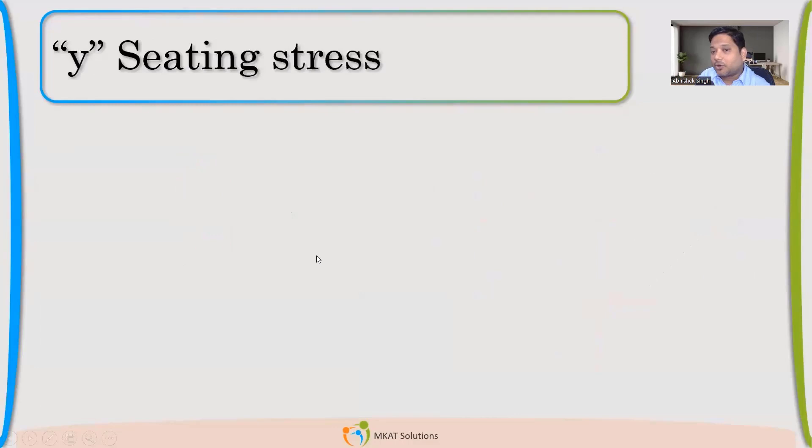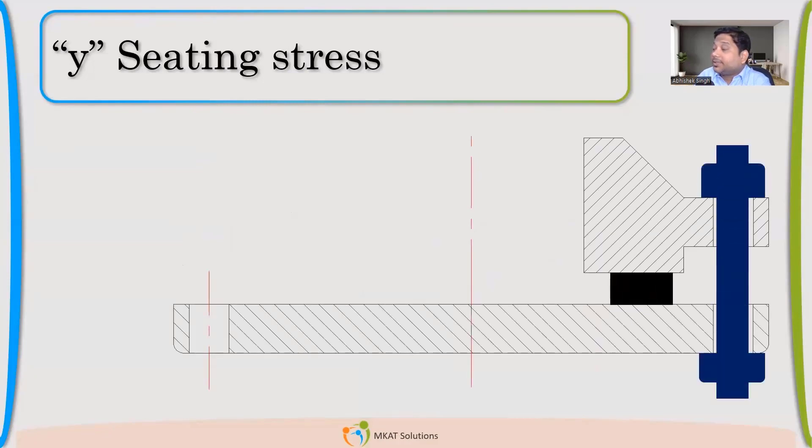Now, let us talk about Y. Why is the seating stress? We call it gasket seating stress. What is this? This is my bolting arrangement. This is the body flange. This is the body flange and this is the blind flange. Now, in this case, there is no pressure.